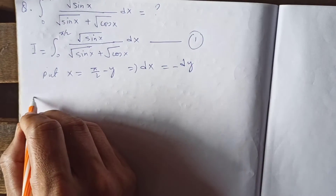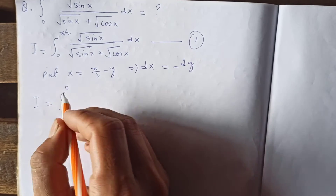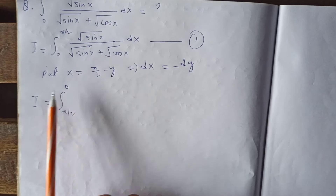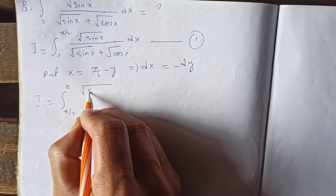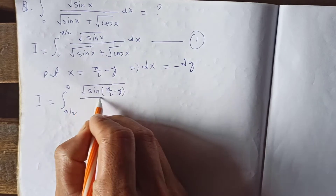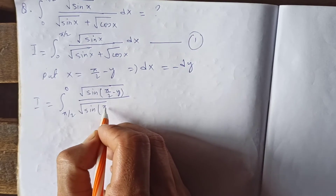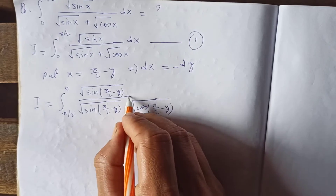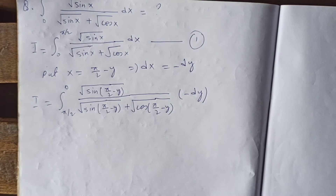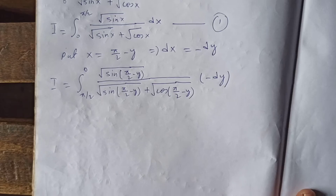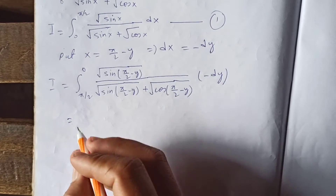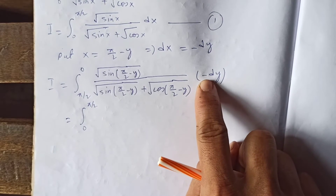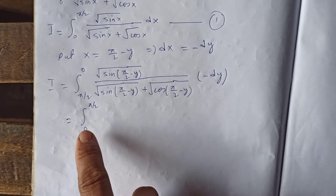Let me call this equation 1. So I becomes the integral from π/2 to 0 — because if you plug x = 0, y = π/2, and if you plug x = π/2, y = 0. Due to the minus sign from dx = −dy, the limits interchange, giving us the integral from 0 to π/2.